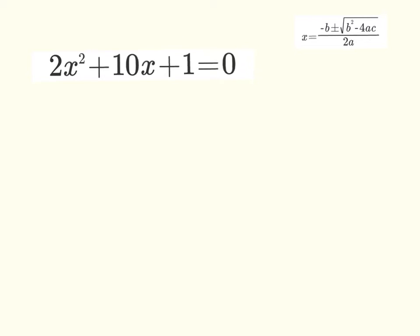So here we have the equation 2x squared plus 10x plus 1 equals 0. If you can see in the top right corner here, I've also included the quadratic formula, so we have that for reference. And you always want to check to see if the equation itself is factorable. So I'm going to use the factoring method that we discussed in an earlier video.